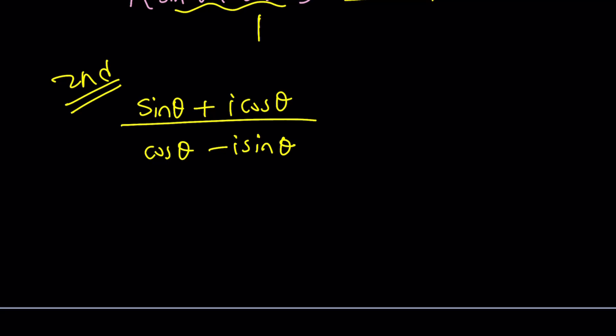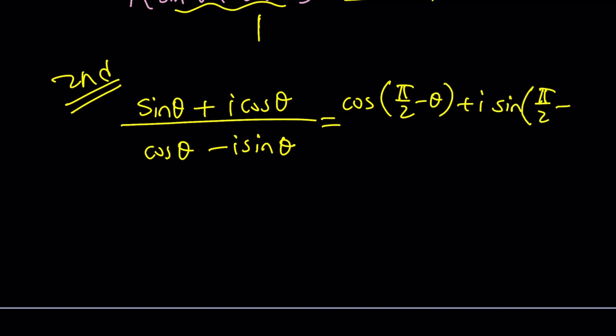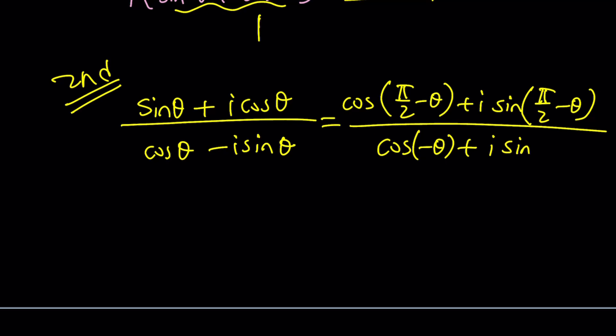For my second method I'm going to use trigonometric identities. To change sine to cosine and cosine to sine — which is what happens in the numerator — I'm going to use complementary angles. When two angles add up to 90 degrees they're called complementary. So I can write sine theta as cosine of pi over two minus theta, and cosine theta as sine of pi over two minus theta. For the bottom, I can take advantage of the fact that cosine is an even function and sine is an odd function.